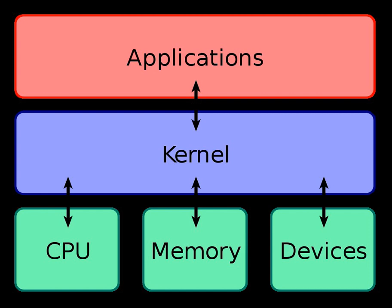In computing, a system call is how a process requests a service from an operating system's kernel that it does not normally have permission to run. System calls provide the interface between a process and the operating system. Most operations interacting with the system require permissions not available to a user-level process — e.g., I/O performed with a device, or any form of communication with other processors — and require the use of system calls.